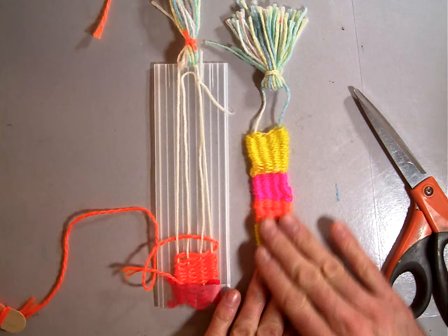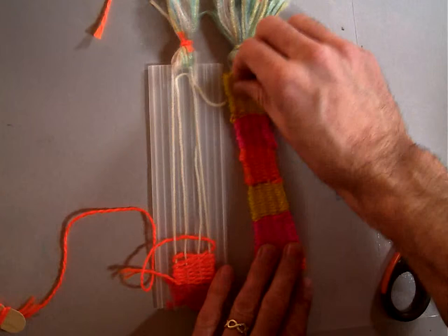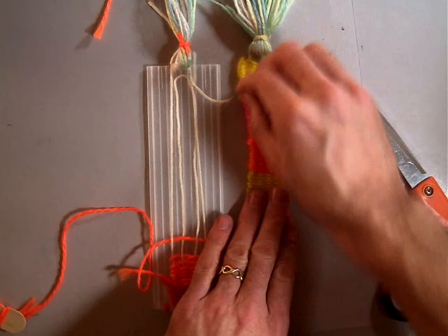Then you just kind of push it up, unscrunch it gently, evenly unscrunch it so that it fills in that space up to your tassel. So that you've got a nice even weave all the way up to your tassel. And that is how you finish your bookmark part five of finishing your tassel.